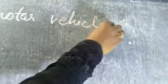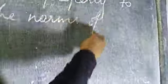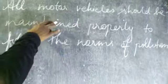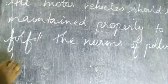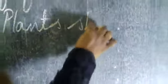All motor vehicles should be maintained properly to fulfill the norms of pollution. Pollution testing centers test how much pollution a vehicle emits. The vehicle should not give out more than the allowed amount of smoke, that is carbon dioxide, and maintenance should be done every six months.